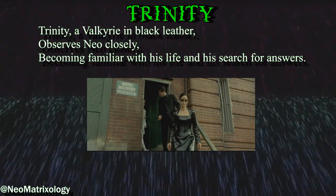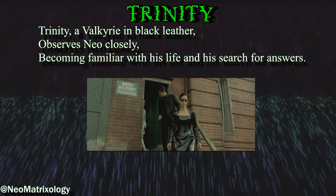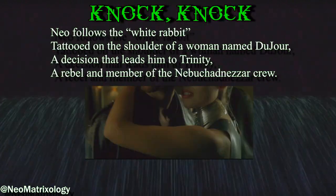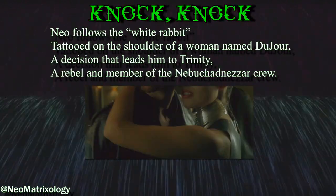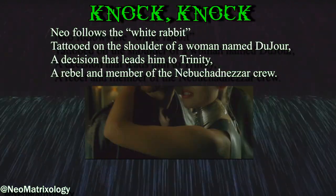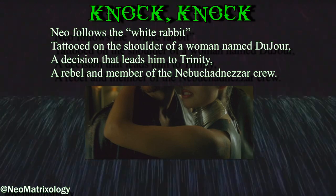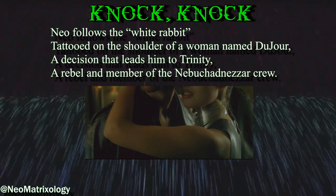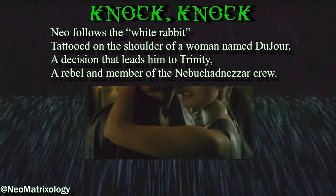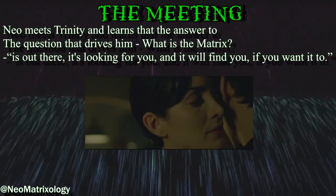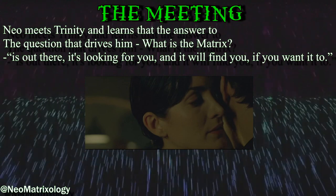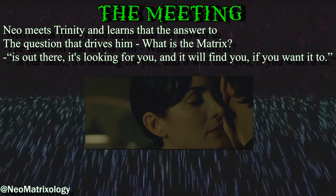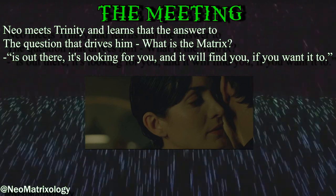Trinity — a Valkyrie in black leather — observes Neo closely, becoming familiar with his life and his search for answers. Knock Knock: Neo follows the white rabbit tattooed on the shoulder of a woman named DuJour, a decision that leads him to Trinity, a rebel and member of the Nebuchadnezzar crew. The Meeting: Neo meets Trinity and learns that the answer to the question that drives him — 'What is the Matrix?' — is out there. It's looking for you and it will find you if you want it to.